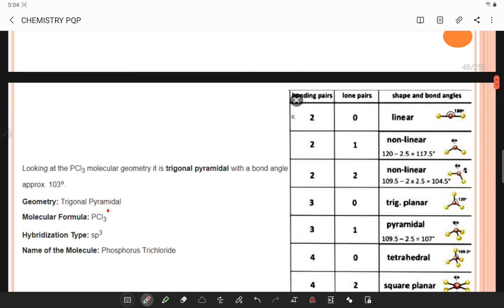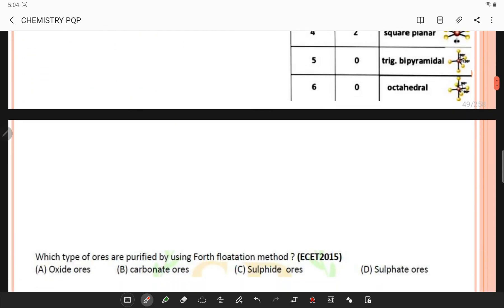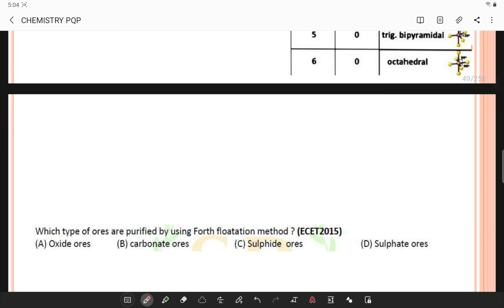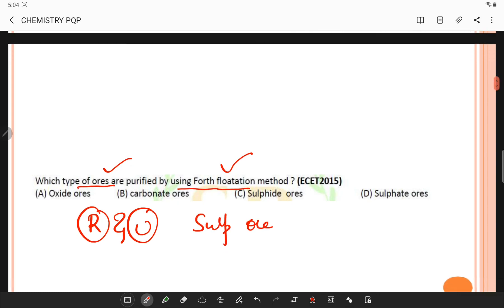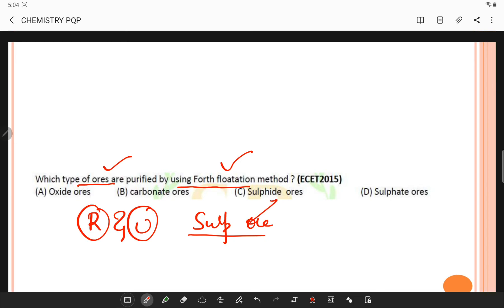Which type of ores are purified using froth flotation method? Froth flotation method is the single most important operation used for the recovery and upgrading of sulfide ore. Only sulfide ores are concentrated by froth flotation method process because pine oil selectively wets the sulfide ore and hence it is brought in the form of froth.